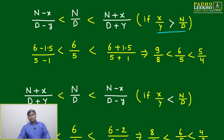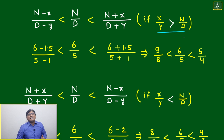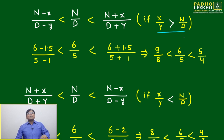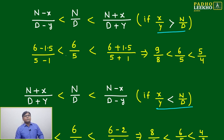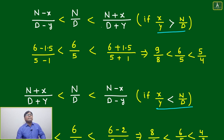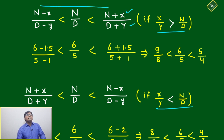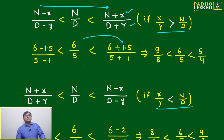If x/y and n/d are not equal, there are two possibilities: either x/y will be more than n/d, or x/y will be less than n/d. In both cases, we will look at what happens. If x/y is more than n/d, then what will happen when you add — the sequence will be like this. For example, 6/5.